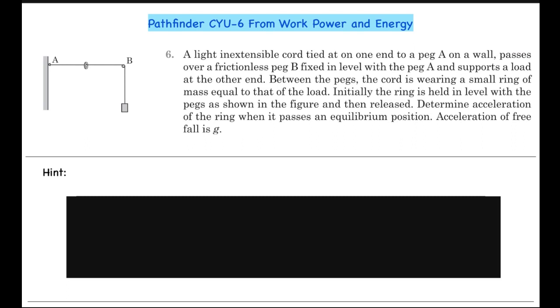ring is held in level with the pegs as shown in the figure and then released. Determine the acceleration of the ring when it passes an equilibrium position. Acceleration of freefall is taken to be g. If you want to give this question a try yourself, you can do it now.